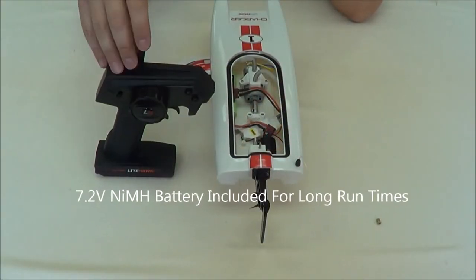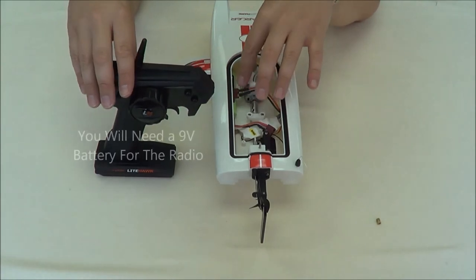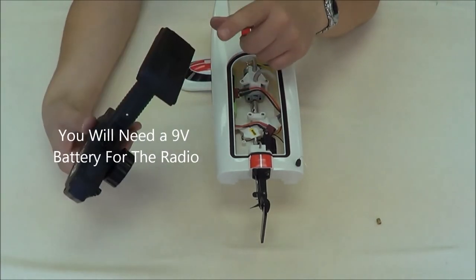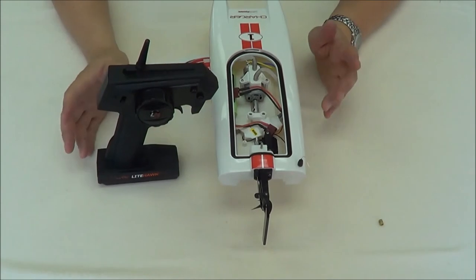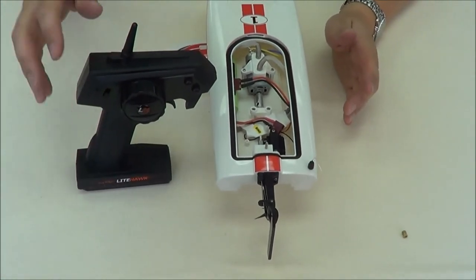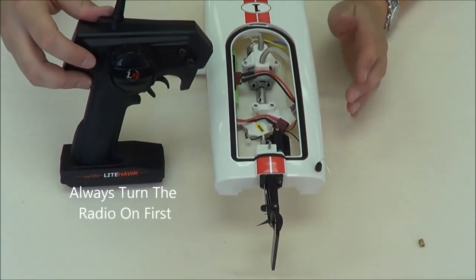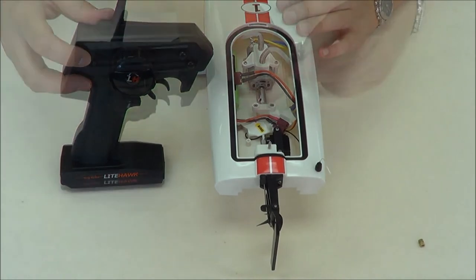We've got the radio out of the box. The battery for the boat comes with it. I need to get a 9-volt battery to go into the bottom of the radio. Whenever you have a radio-controlled item, you always want to turn the radio on first before the boat.